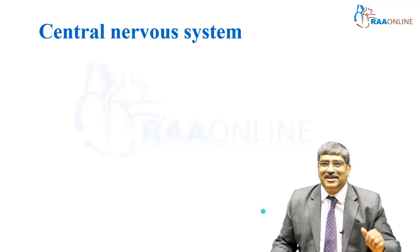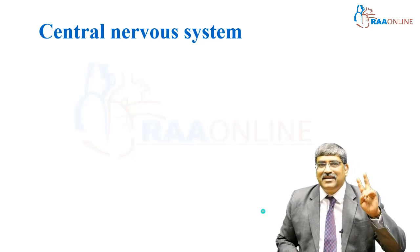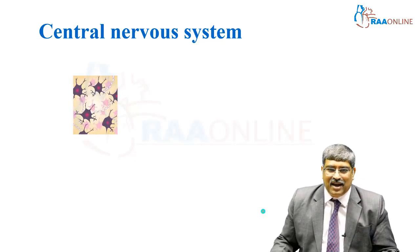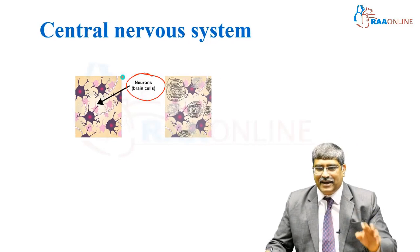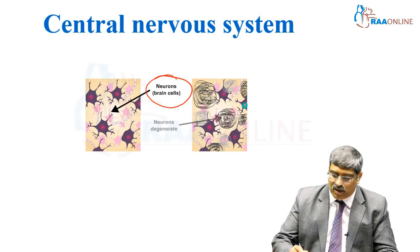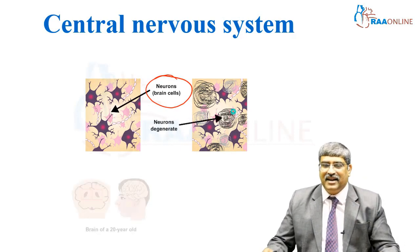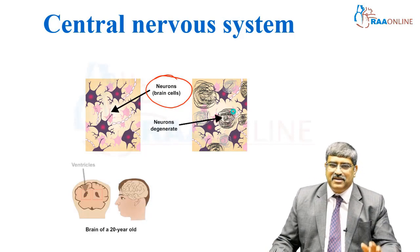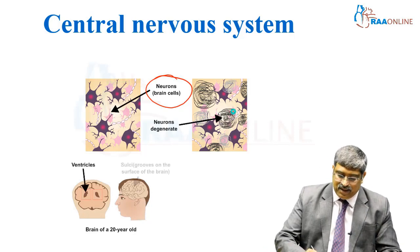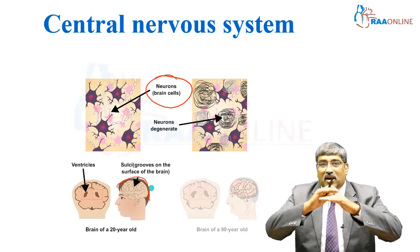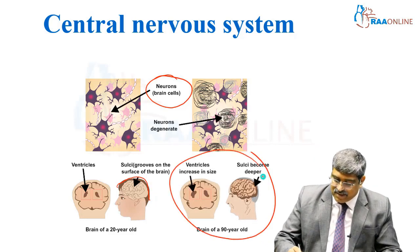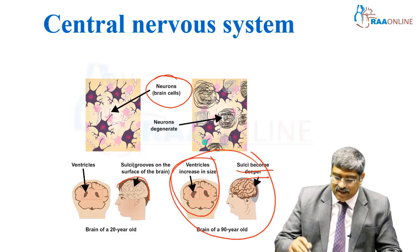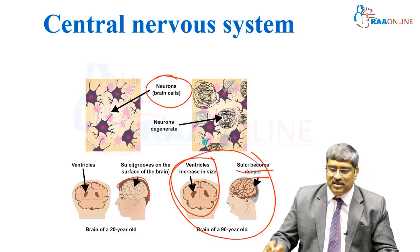Coming to the central nervous system, three anatomical changes happen. The first and foremost is the number of neurons decreases and degenerates. Another important thing is the size of the ventricle and the cell size. Normally, the cell sulci are on the surface of the brain, but in elderly patients, the sulci become deeper and the ventricle size increases. These are the three major changes.